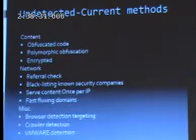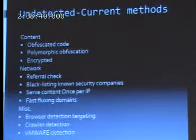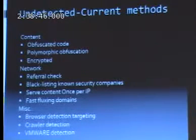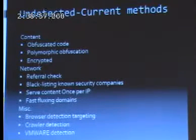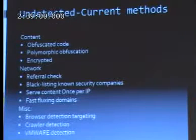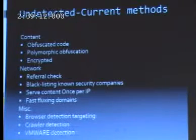Attackers also verify that it's a real browser visiting their site, not a crawler. There are thousands of ways to differentiate between a crawler — not just like a Google crawler, but the in-house crawlers that most security companies have built to visit malicious webpages and pull down content. But most importantly for the content itself, they're obfuscating it. They've moved one step past that to polymorphic obfuscation, and in the last year or two they've increasingly used encryption within various parts of the content being passed down.